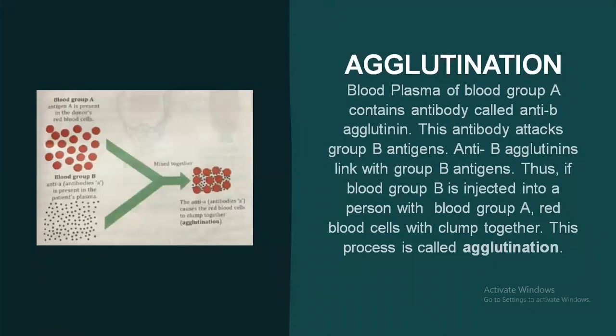First of all, we are coming to our first topic, agglutination. But before discussing this, you should know what are antigens and antibodies. Antigens are the proteins present on the surface of RBCs, while antibodies are present in the blood plasma. Both antigens and antibodies work against each other.